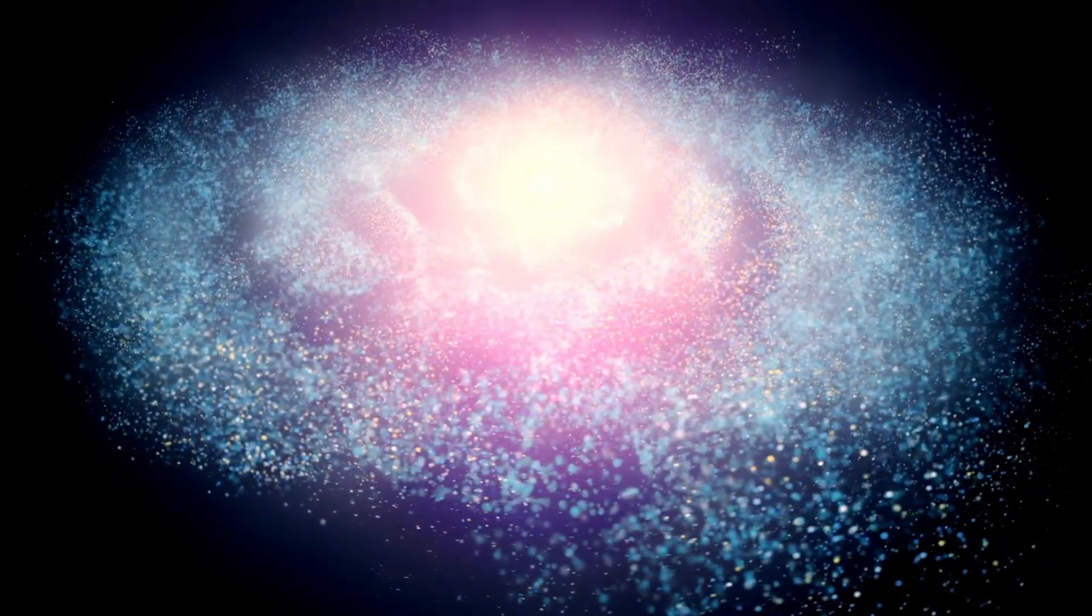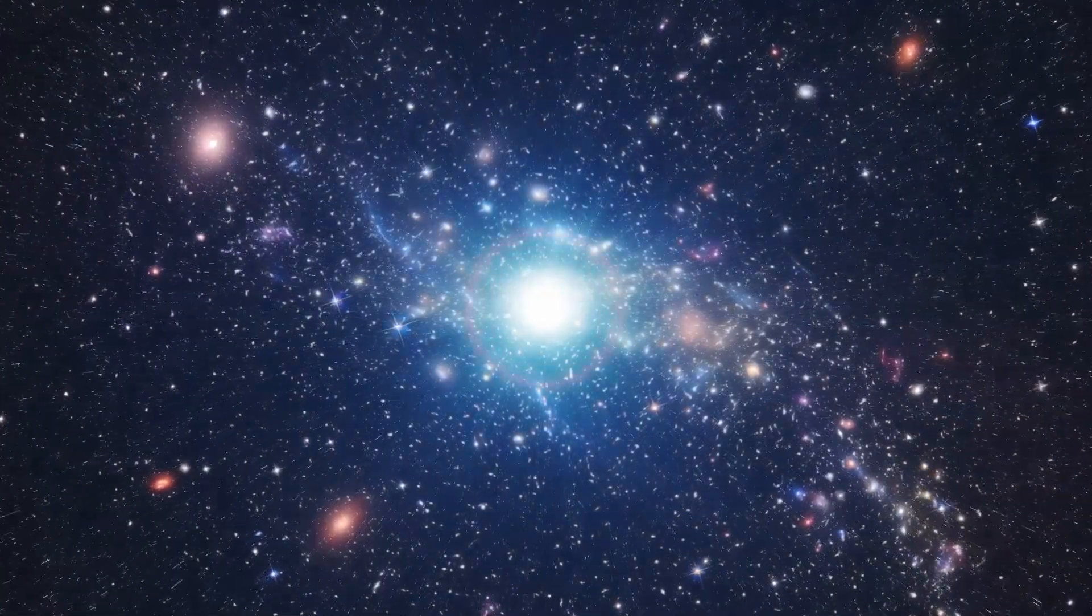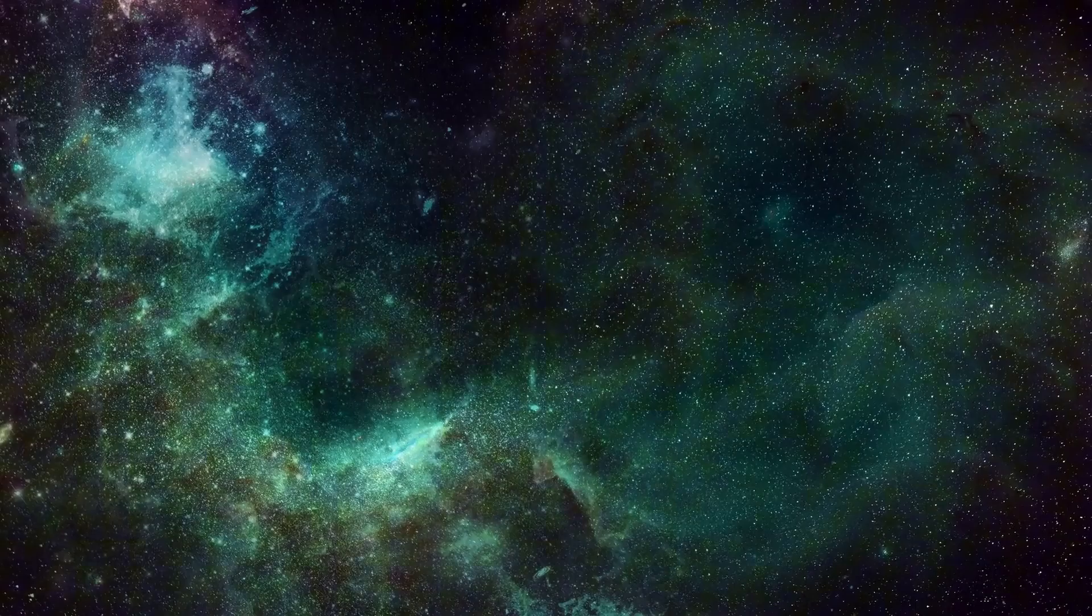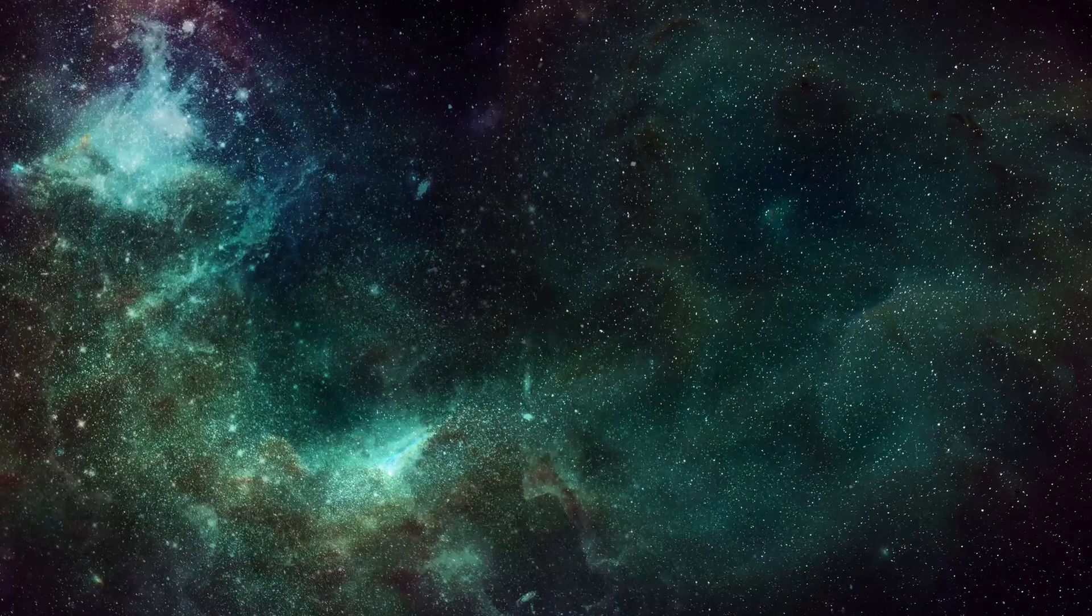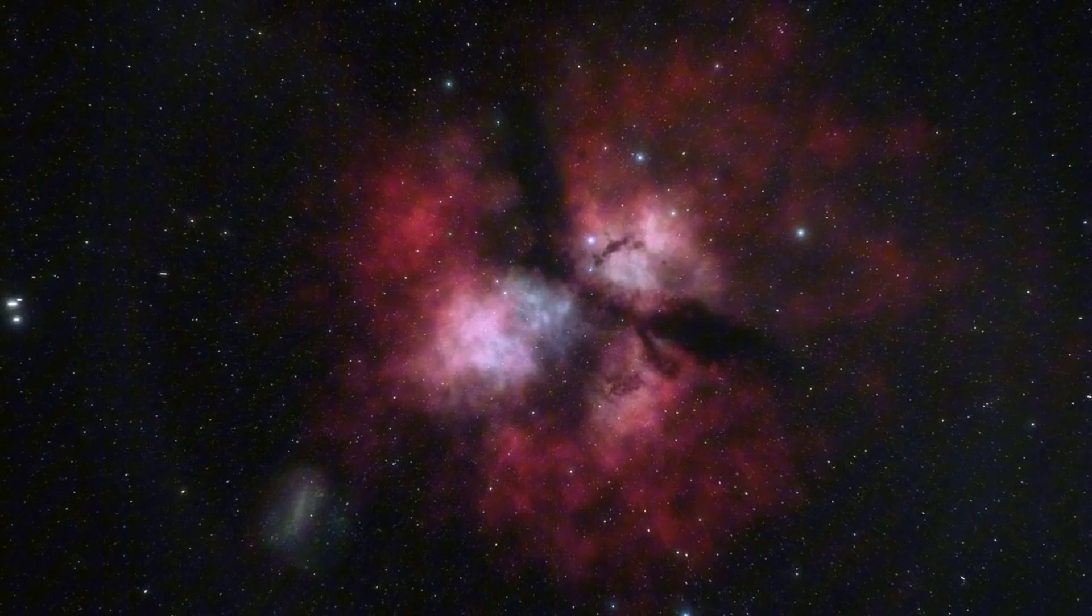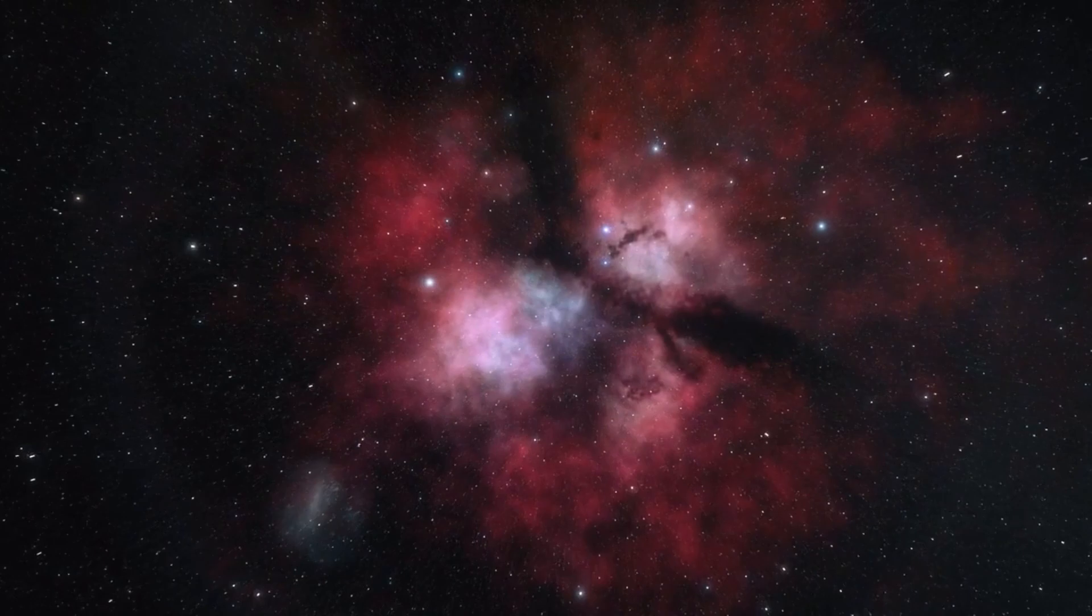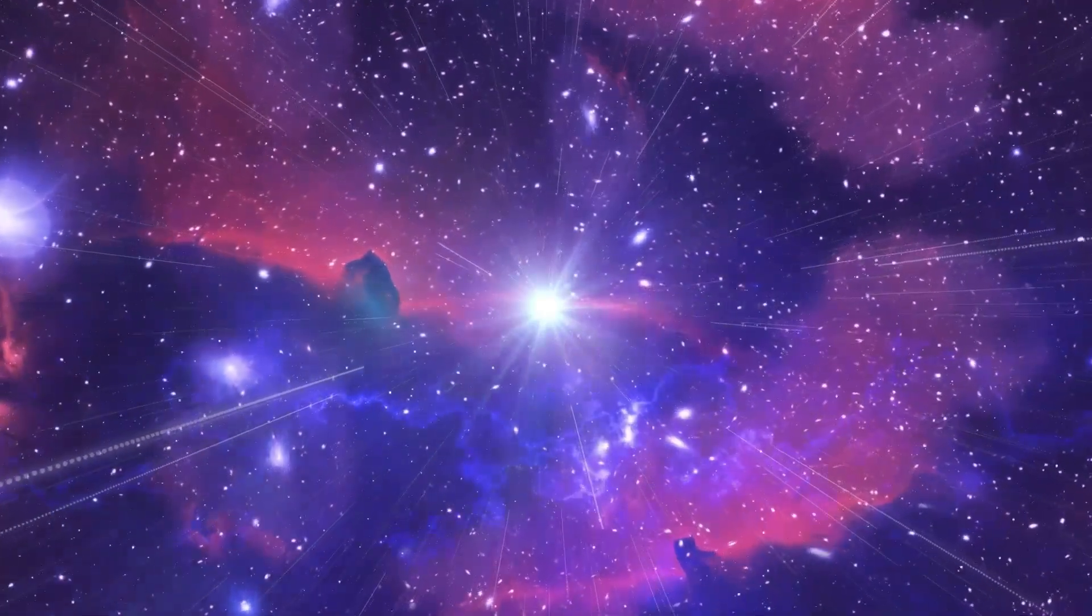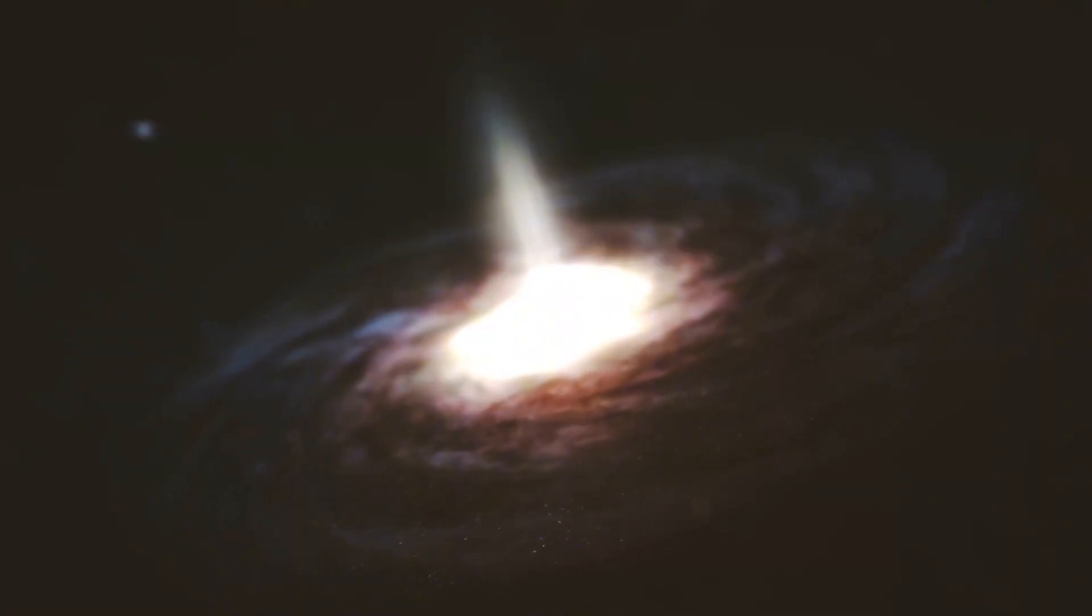Another captivating aspect of Betelgeuse is its stellar life cycle. As a red supergiant, Betelgeuse has evolved from a main sequence star, during which it fused hydrogen into helium. Over millions of years, as the hydrogen in its core was depleted, it transitioned to fusing helium into heavier elements like carbon and oxygen. This process continues until it eventually reaches the iron stage, where fusion stops, leading to its catastrophic collapse and subsequent supernova. Understanding this evolutionary pathway helps scientists piece together the life cycle of massive stars, which ultimately enrich the interstellar medium with heavy elements upon their death.